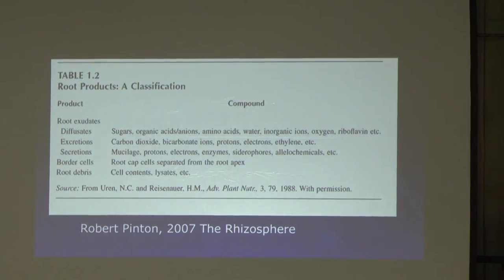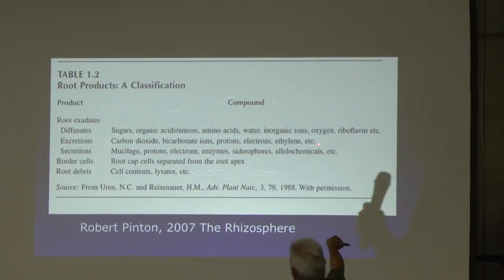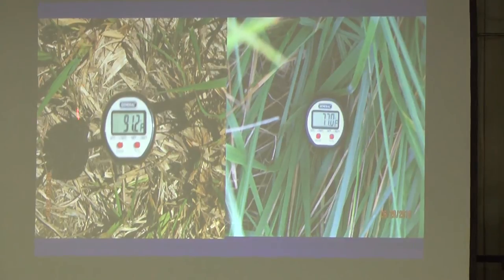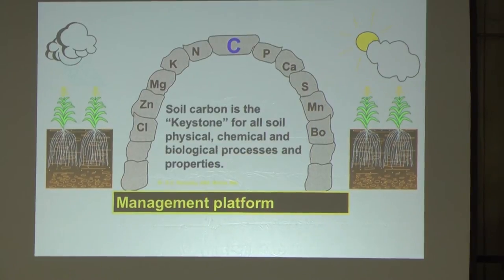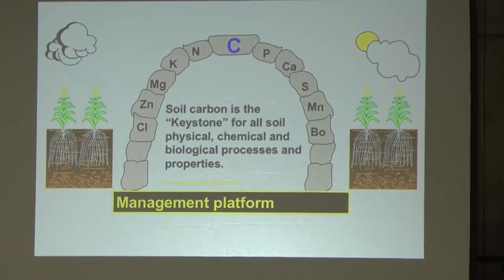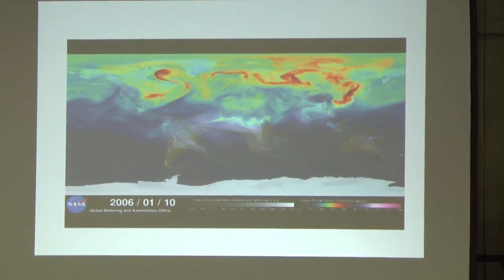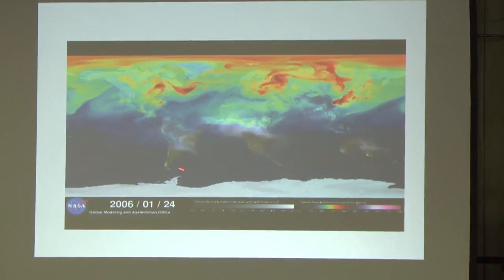A great book for the geeks: 'The Rhizosphere' by Robert Pinton. These roots leak sugars, organic acids, amino acids, water, CO2, bicarbonate ions, protons, electrons, and ethylene — all these chemicals leak into the rhizosphere. Plants also cover the soil and protect it.